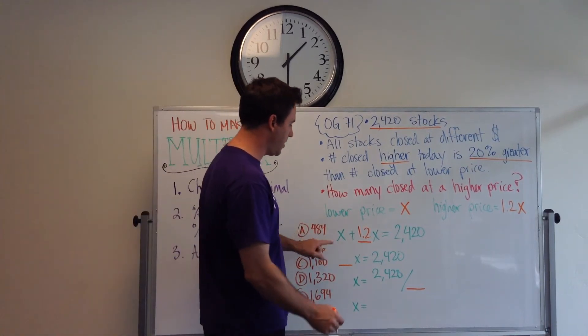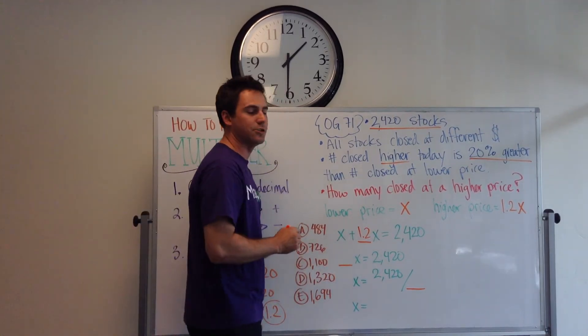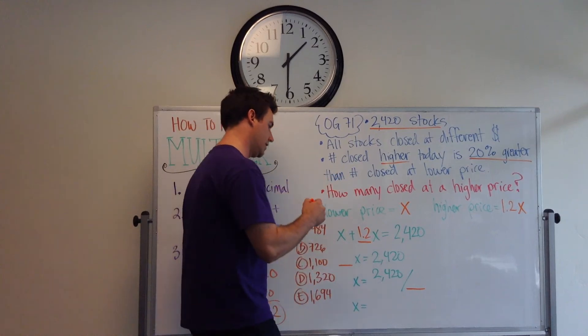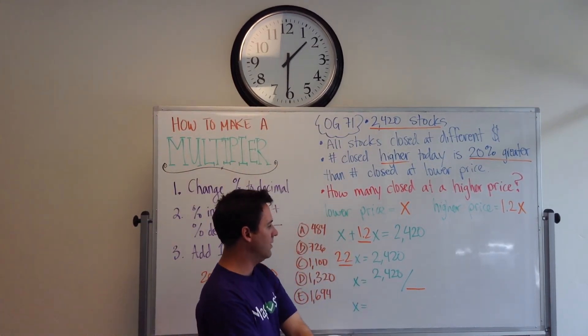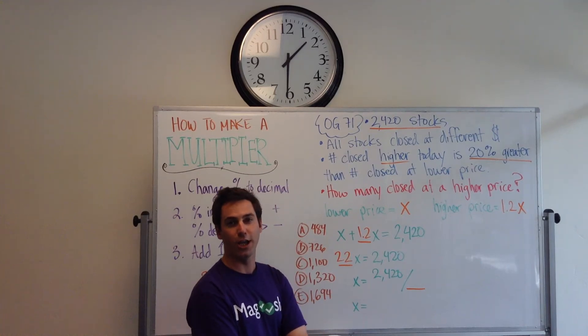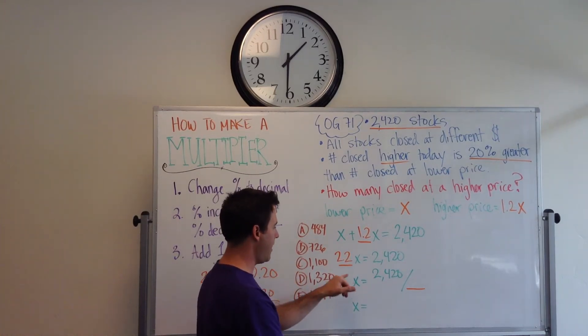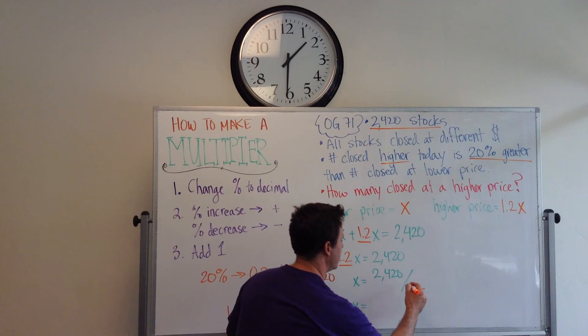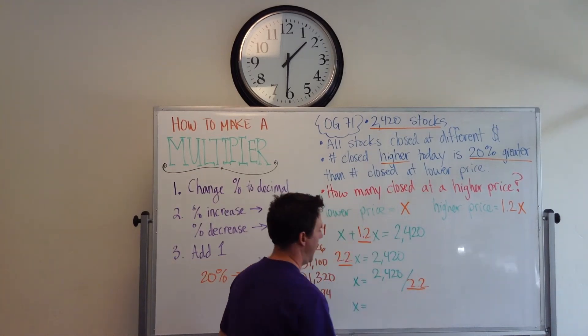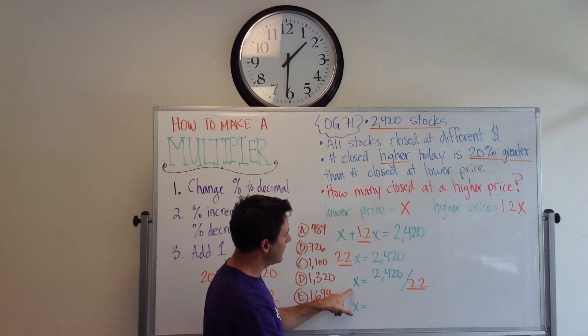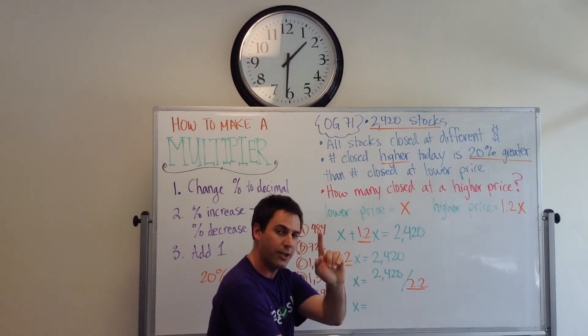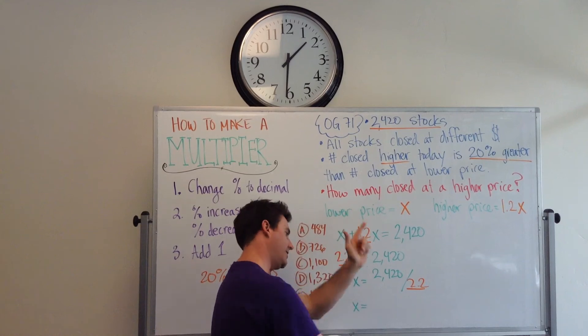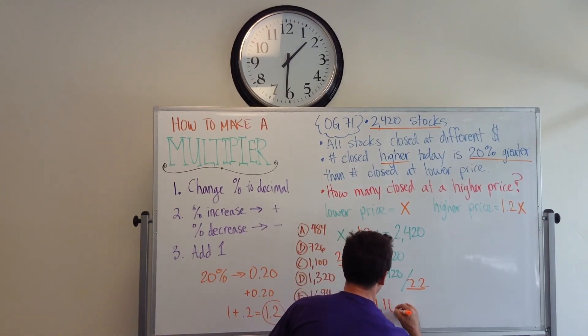So, x plus 1.2x. And then if we want to solve this, we know, x plus 1.2x, this x is like a 1. And so, we get 2.2x equals 2,420. Now, we can divide by 2.2 and bring that over here. And we're solving for x. So, x equals 2,420 divided by 2.2. 1100. Excellent.